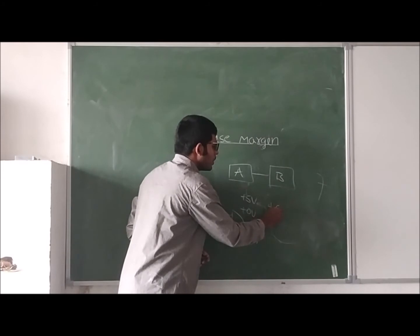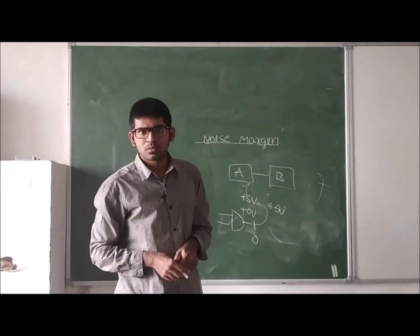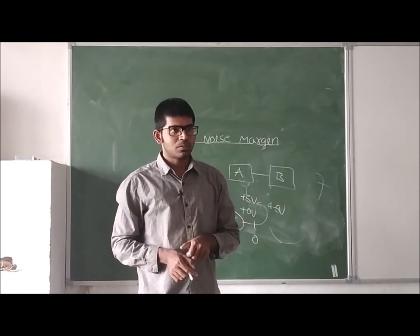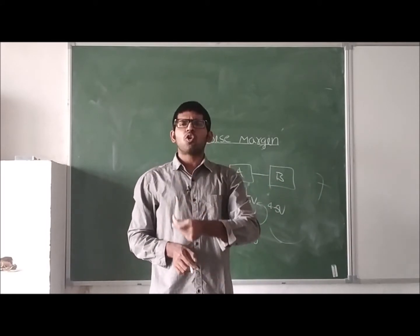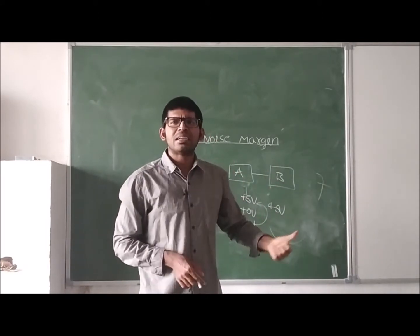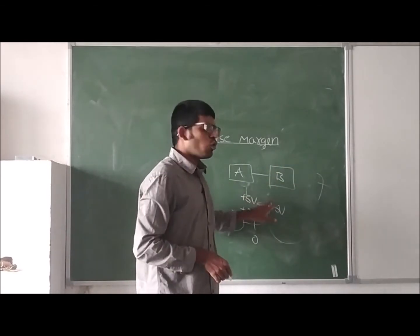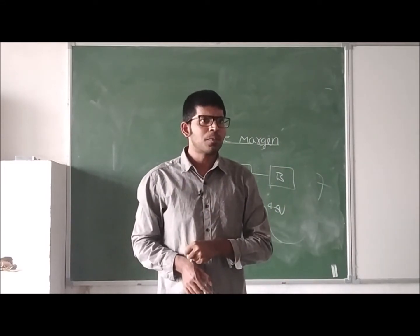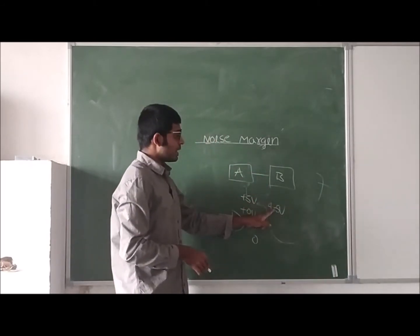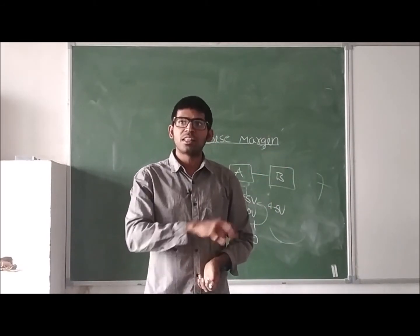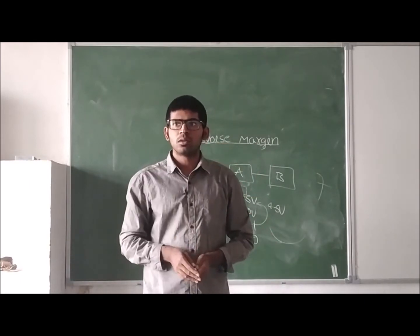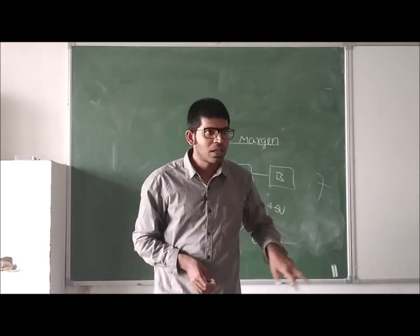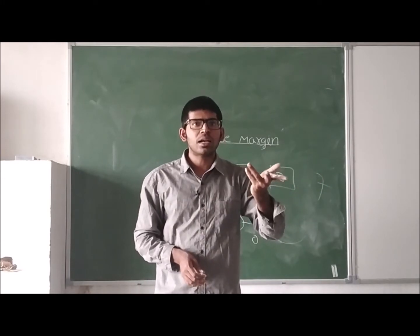Sometimes this output voltage may be 4.5 volts. Now this 4.5 volts is high or low? High voltage. Because why we are getting 4.5? Maybe due to some internal resistance. We are getting 4.5. The device B should understand this 4.5 as low level or high level? High level. If the device B understands this 4.5 as the high level, then these two devices are compatible. If the device does not understand, if the device understands that 4.5 as 0 volts or logic 0, then these two devices are not at all compatible.